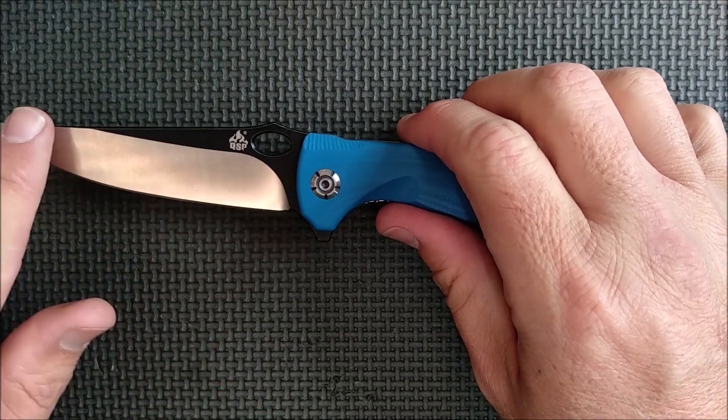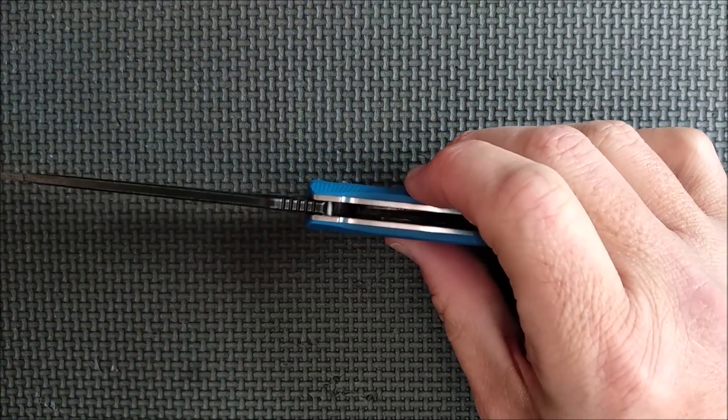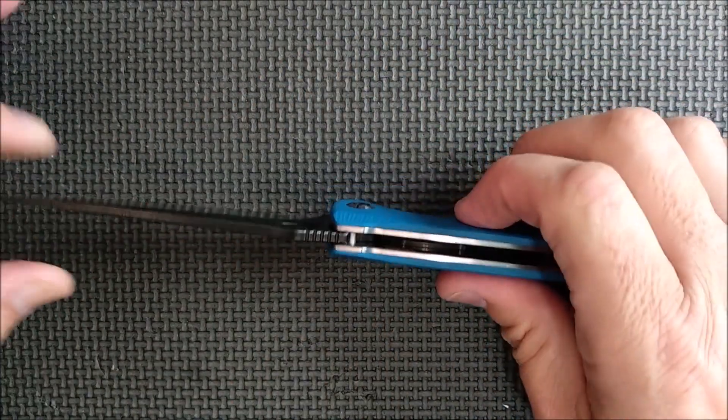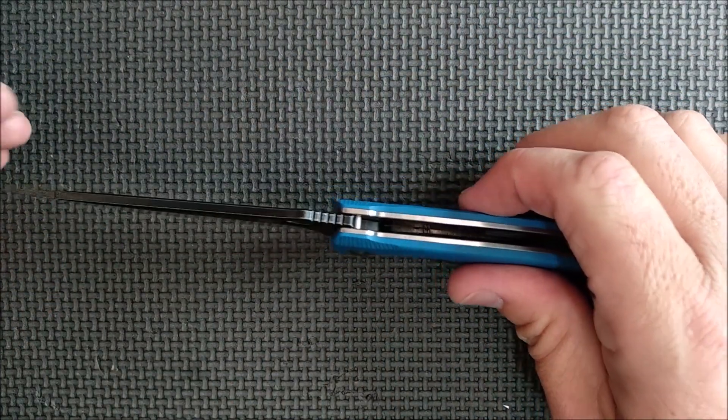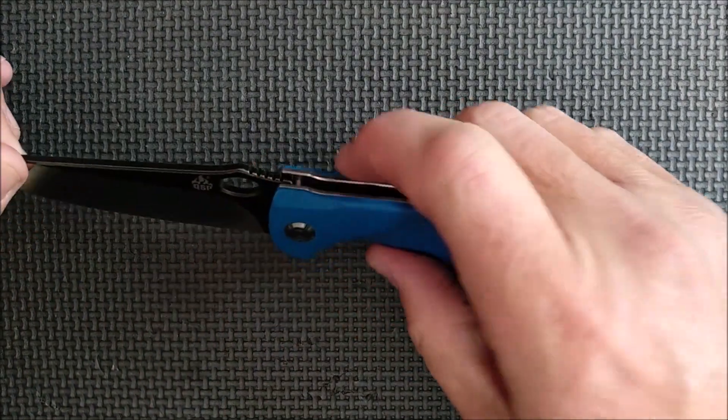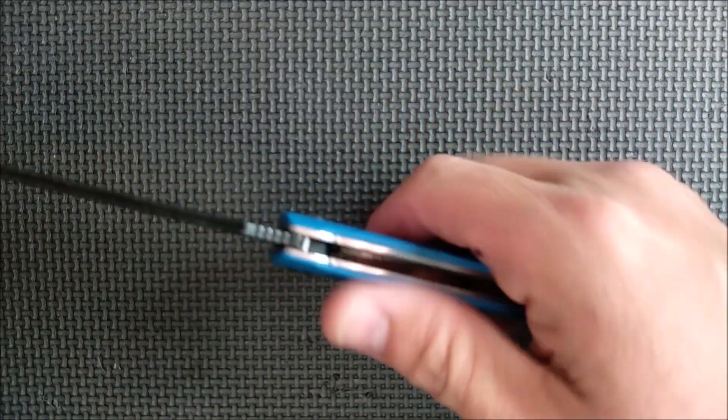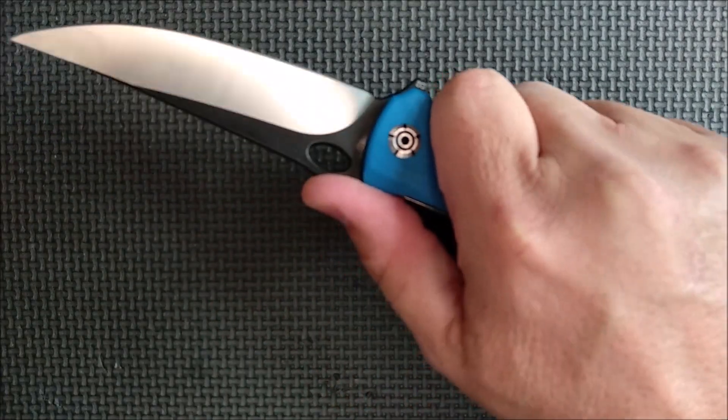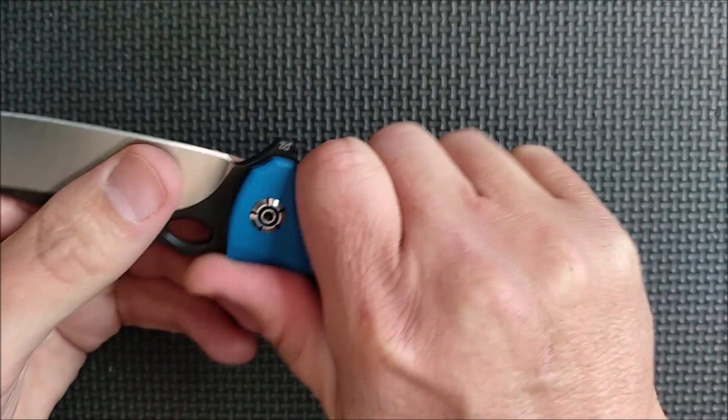Saber grind, which is a flat grind. The blade keeps its full thickness until the black runs out right there, and then it starts tapering down. Got a nice look to it. Chamfered edge right here. A little bit of jimping there on the riser, so your thumb can rest in there quite securely. That's quite nice.